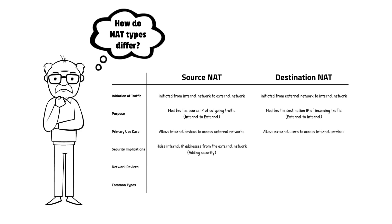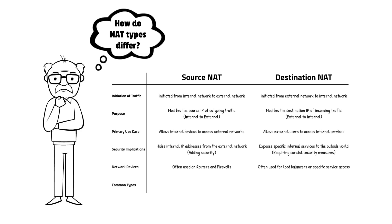In terms of security, Source NAT helps to conceal internal IP addresses from the external network, providing an additional layer of security, whereas Destination NAT can expose certain internal services to the outside world, necessitating stringent security measures. Source NAT is typically implemented on routers and firewalls, whereas Destination NAT is often used in load balancers or for specific service access. Common implementations of Source NAT include static NAT, dynamic NAT, and port address translation, while Destination NAT commonly involves port forwarding.